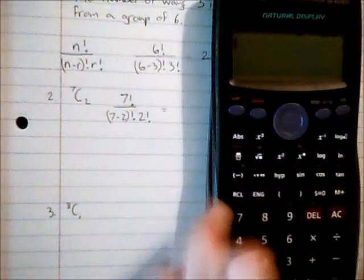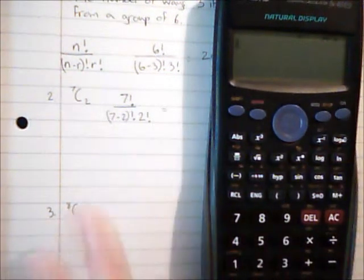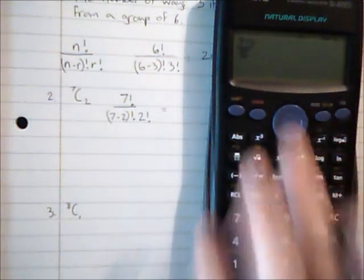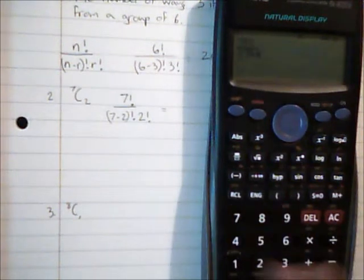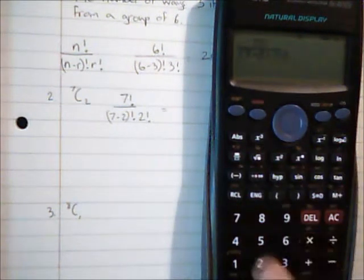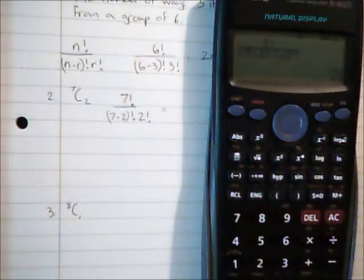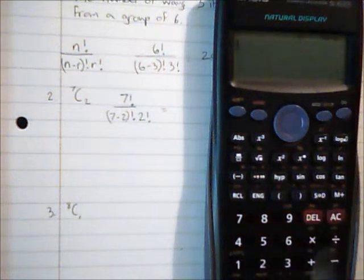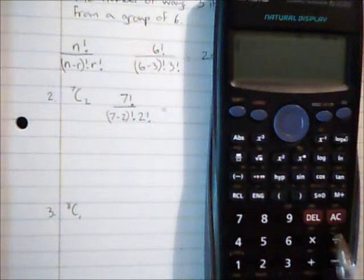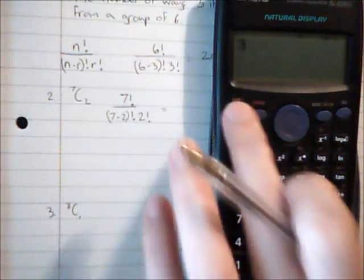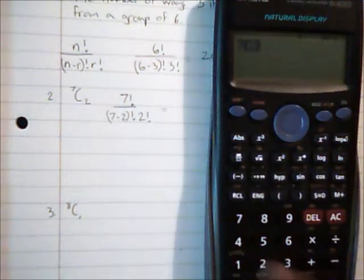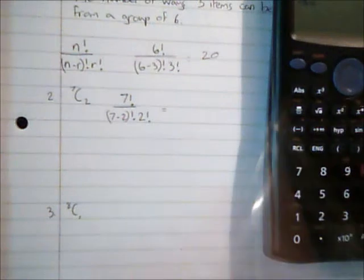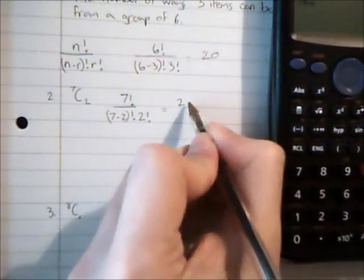I can evaluate that and I can also use the combinations function on my calculator to do it in one step. So seven factorial over seven subtract two factorial times two factorial and I can see there are 21. I can obtain that using down here I've got a combinations button ncr so if I do seven ncr two it gets me 21 straight away. So I can use that to speed things up, 21.